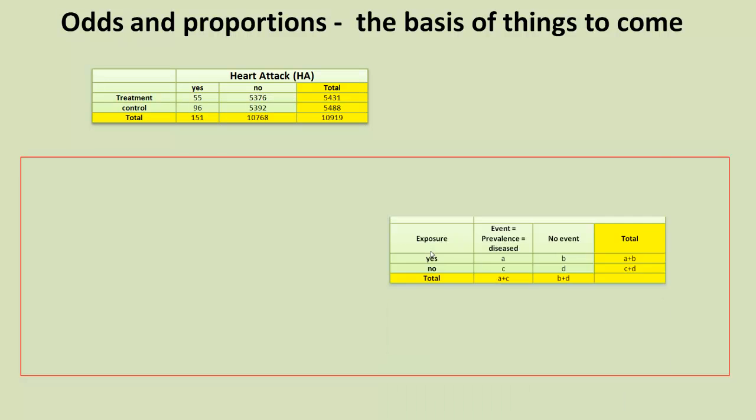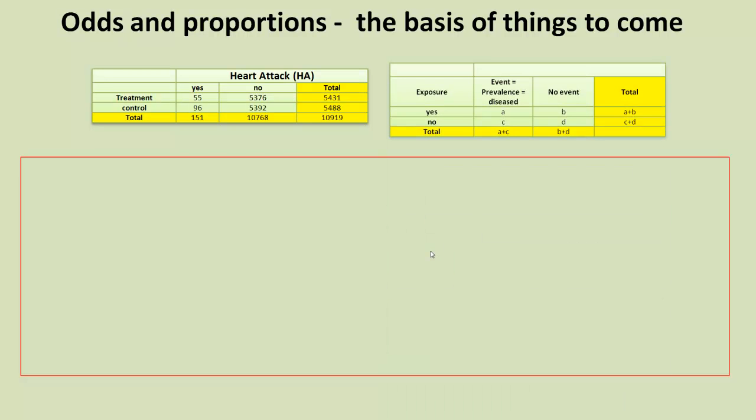We can think of this table in a more generic manner. So, we can think of the first column, instead of being treatment, as being some sort of exposure. It might not be a negative exposure. It might not be a harmful substance. It could be something good like eating veg or taking one glass of wine a day. And then we can also think about the heart attack as being an event or a prevalence of a particular disease.